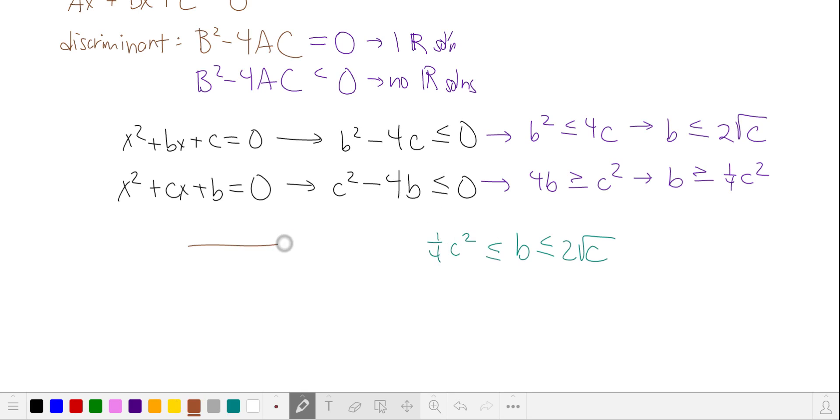So there aren't too many values that are going to satisfy this, so let's take some different values of c. We'll calculate 1 fourth c squared, and we'll calculate 2 times the square root of c and see what integers b fit in between that.